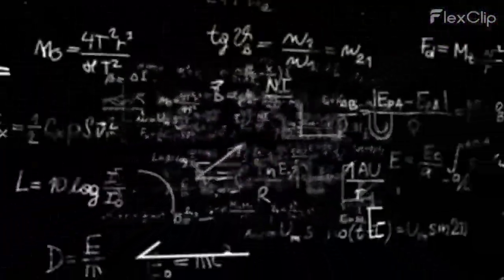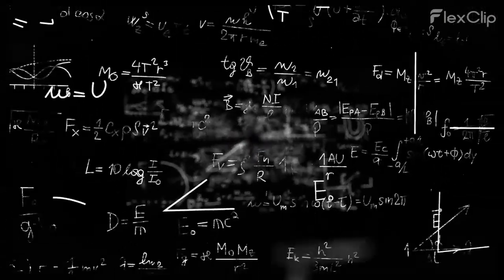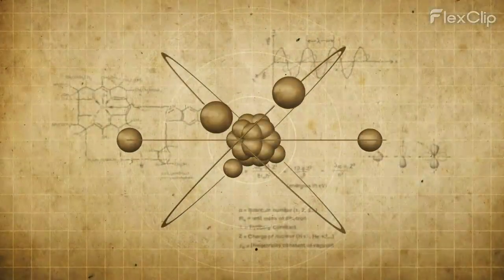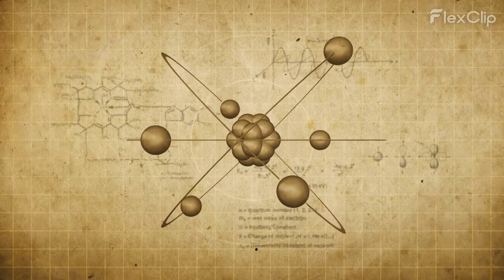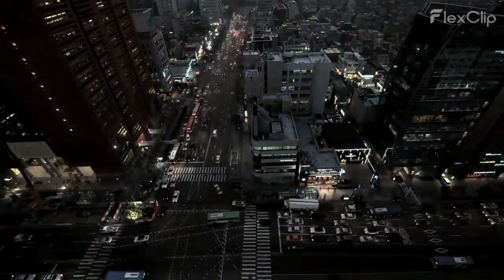Space-time is described by a mathematical framework that accounts for the curvature caused by massive objects. This curvature influences the motion of objects within it. Time is the dimension in which events occur and are measured.